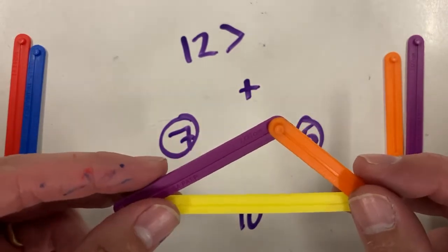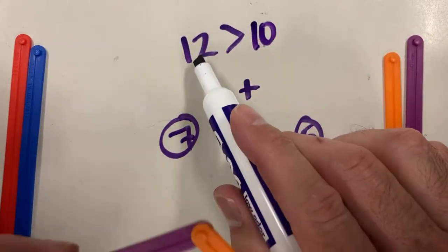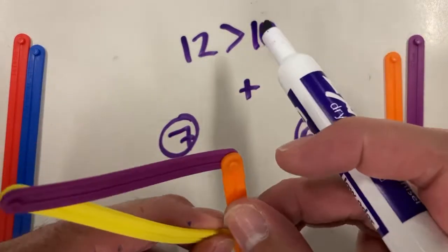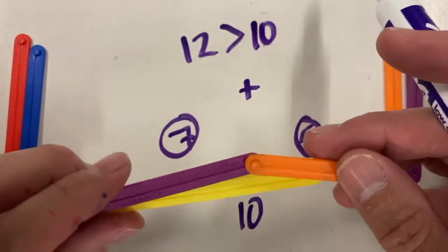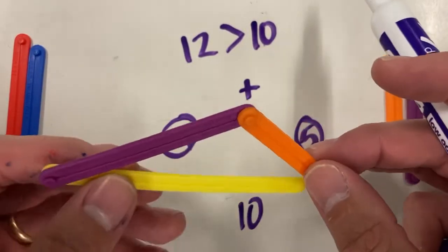and then create an angle, then yes, that will make a triangle. Because 12 is still longer. 7 and 5 together is 12. It's longer than this other side. So it makes a triangle.